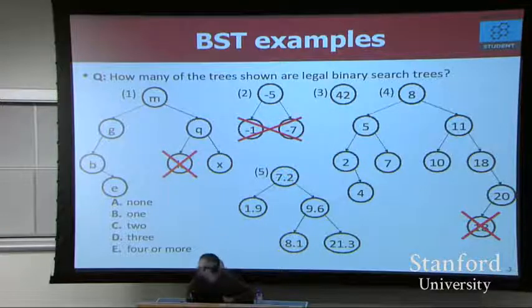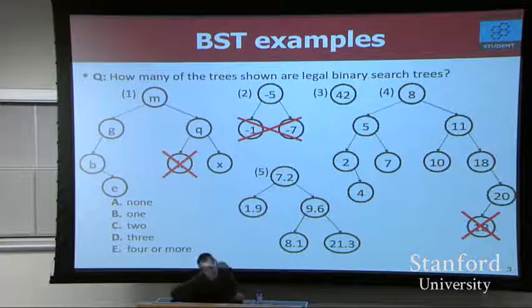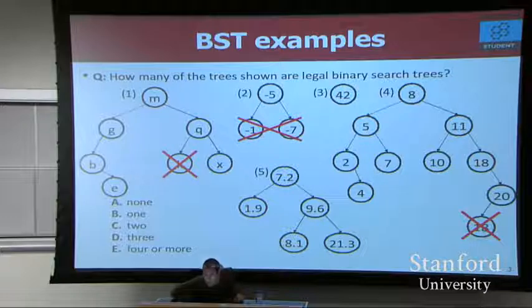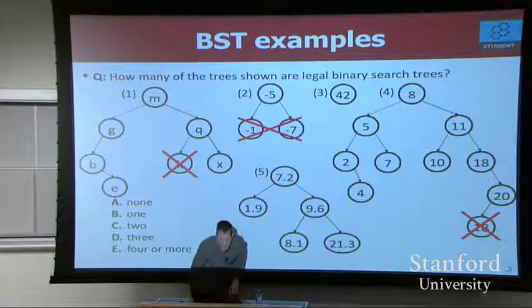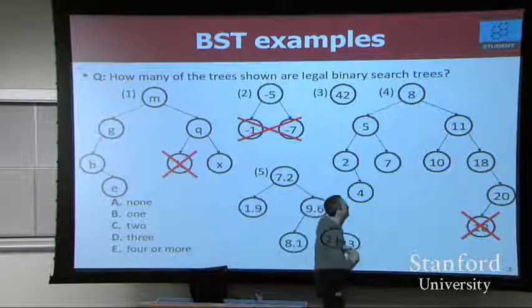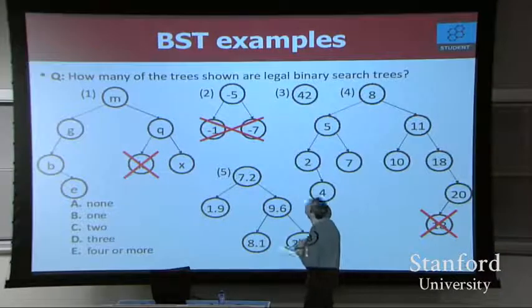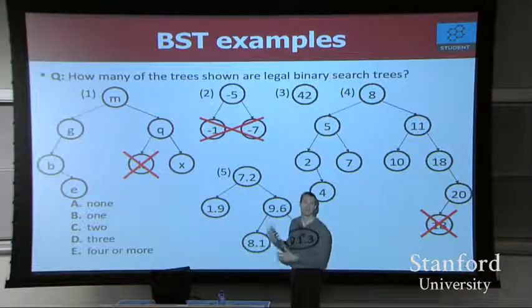Okay. Survey says... I crossed out those ones. So I guess, what does that mean? That means number one, two, and four are illegal. So three and five are legal. So C2 I think is the right answer. But a lot of people miss some of these issues, right? Let's look at why these aren't legal binary search trees.